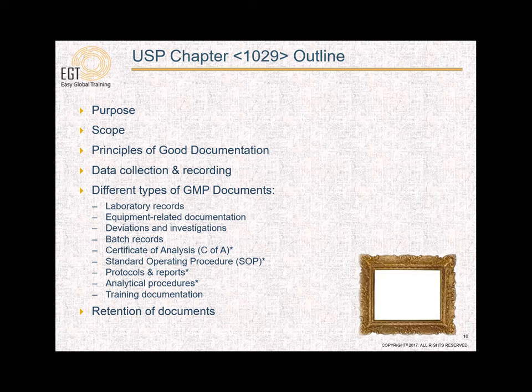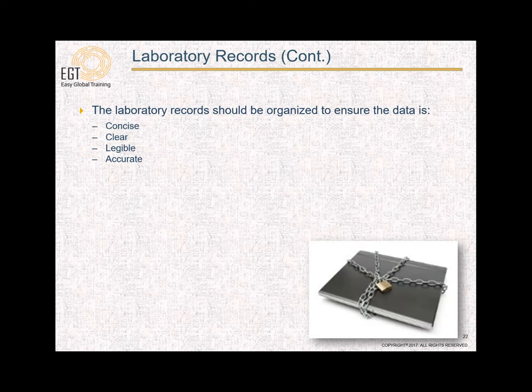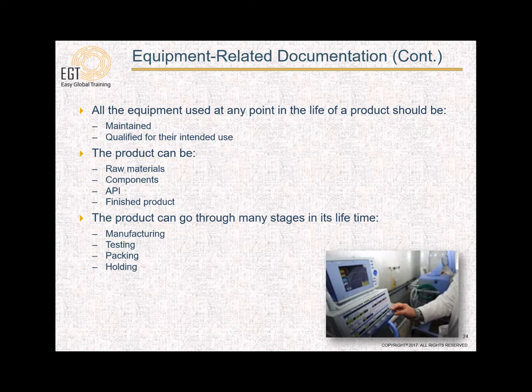In this slide I have listed the outline of U.S.P. Chapter 1029. Continuing on data collection, the next subject discussed in U.S.P. Chapter 1029 is the different types of GMP documents and what information you need to include in each type.